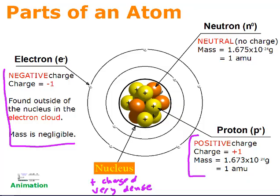The nucleus takes up very little space and yet contains basically all of the mass of the atom. The electron cloud takes up most of the space but its mass is negligible, so the electron cloud has very low density. Pause the video if you're still writing any of this.